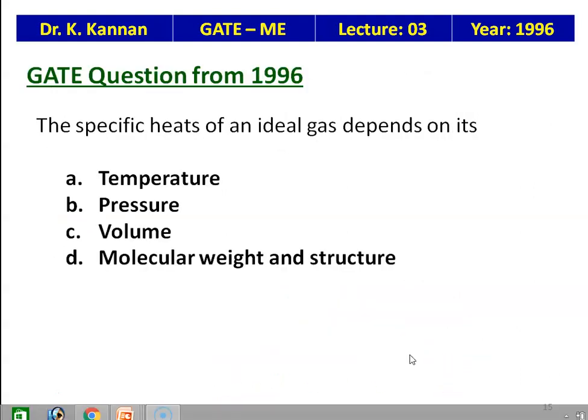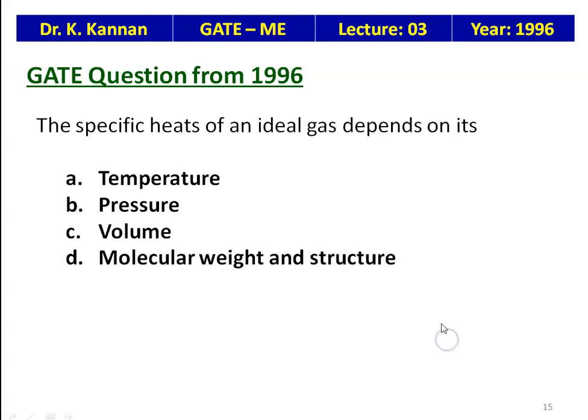Now we solve GATE questions from the 1996 question paper. The specific heat of an ideal gas depends on — temperature, pressure, volume, or molecular weight and structure? The correct answer is temperature.